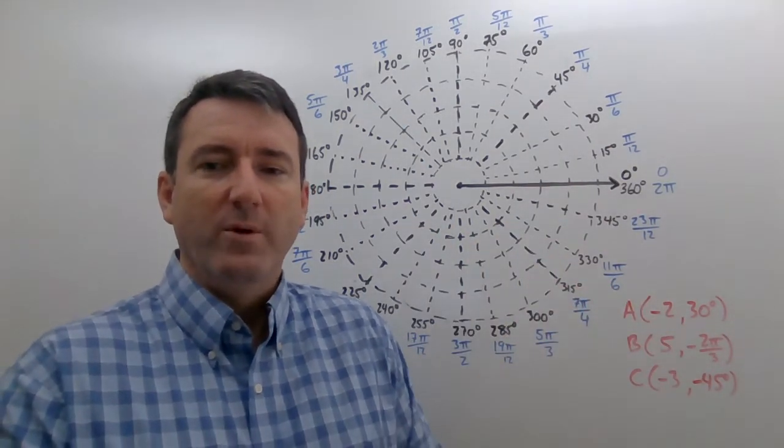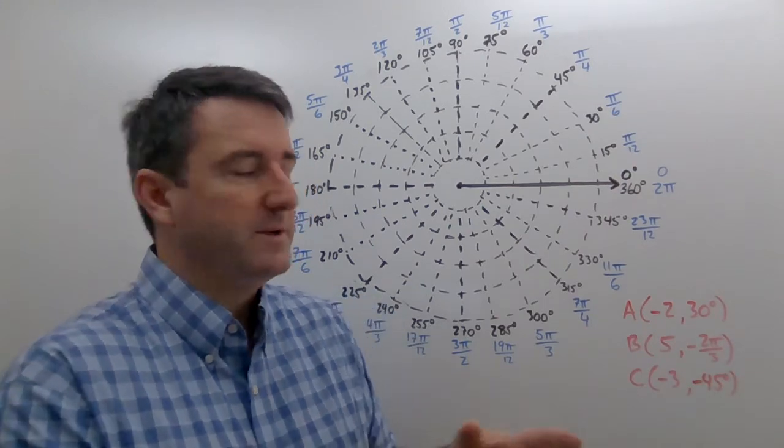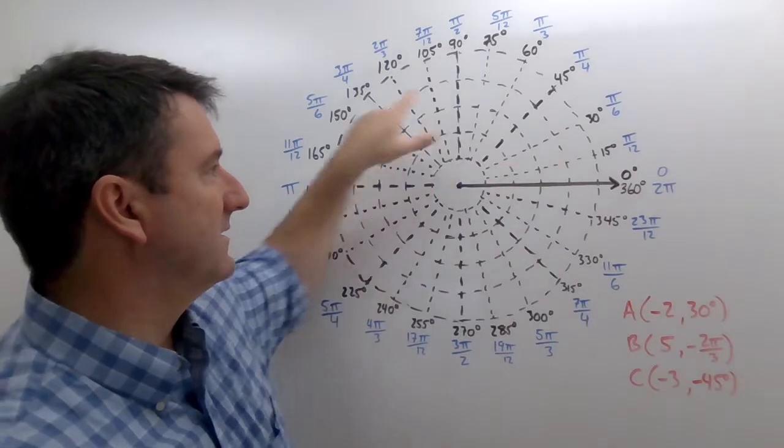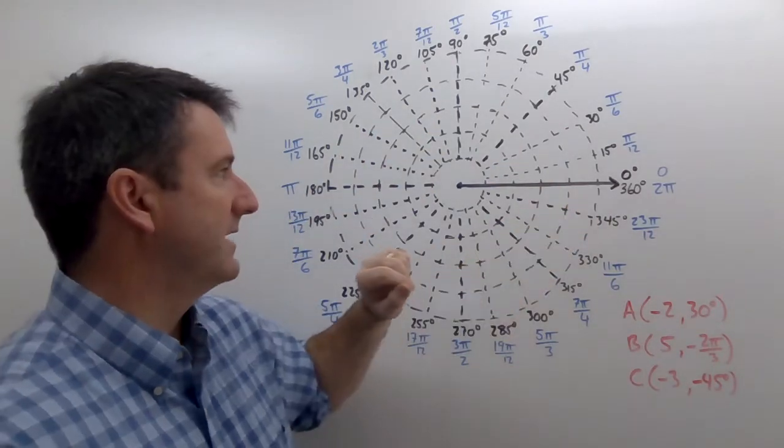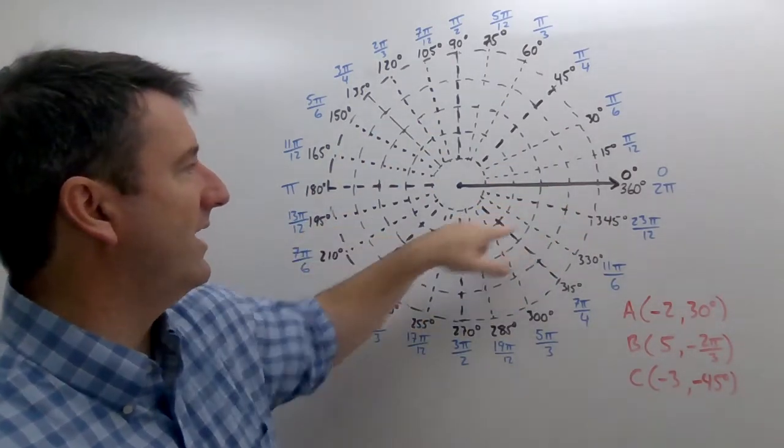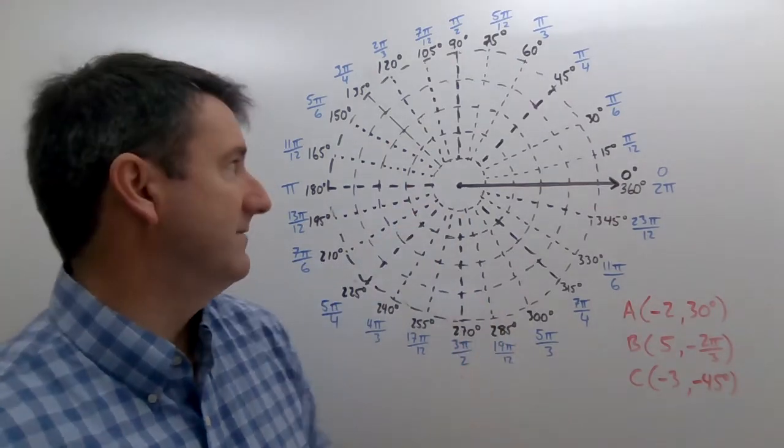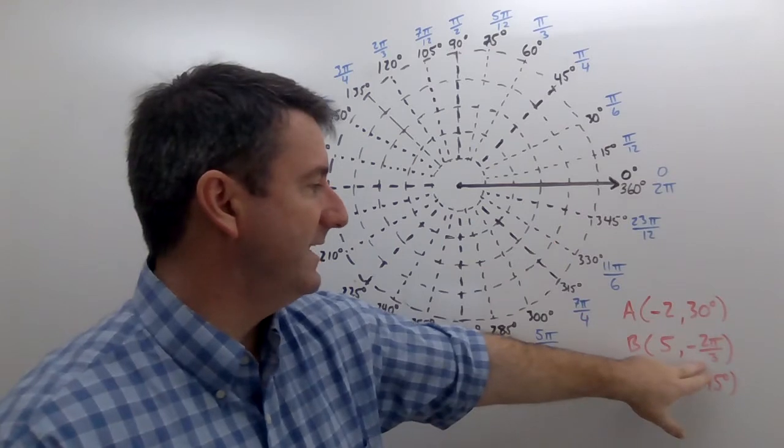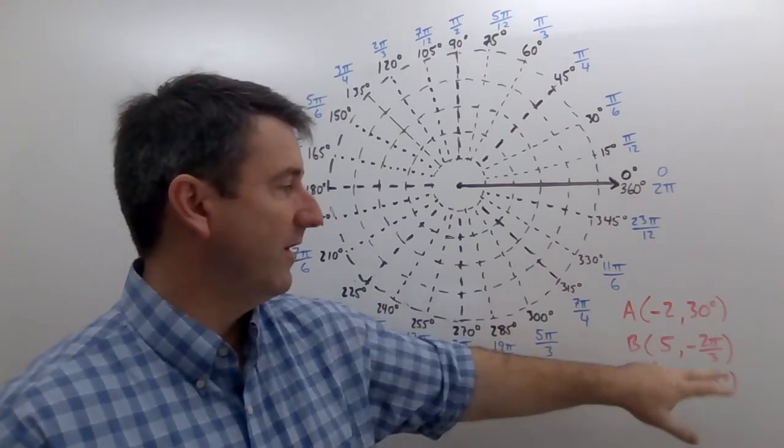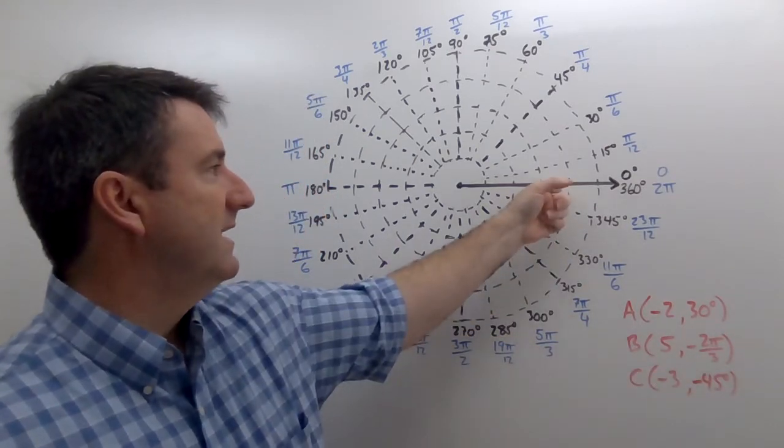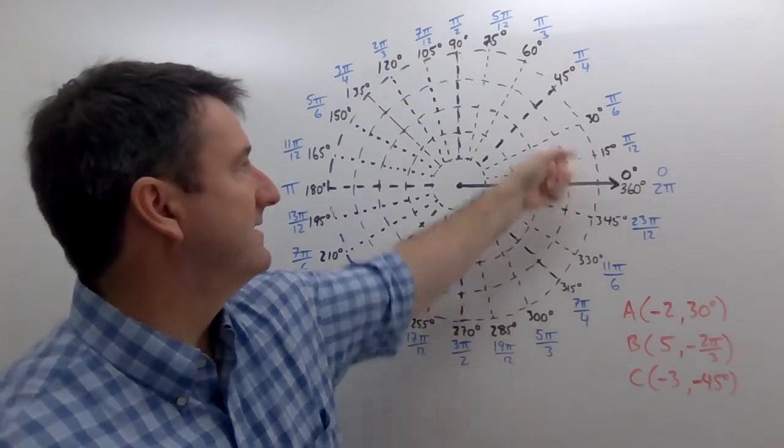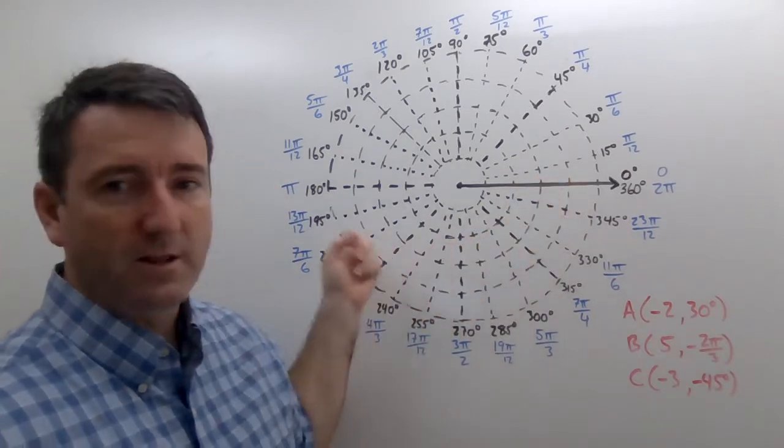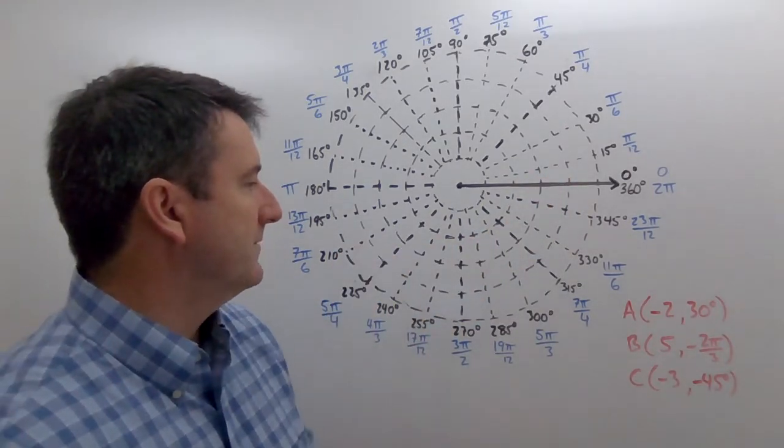So what does it mean to have a negative angle, first of all? I'll start with angles because we've already talked about those. Remember, in trigonometry, we said that positive angles are measured in the counterclockwise direction. And if we measure in the clockwise direction, that's a negative angle. And so if we have a negative value for our angle, for our theta, that just means start here at the polar axis. And instead of measuring your angle in the counterclockwise direction, measure clockwise.